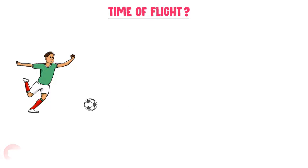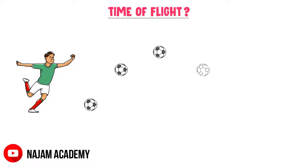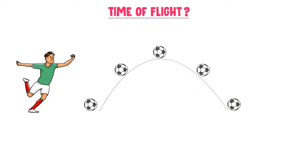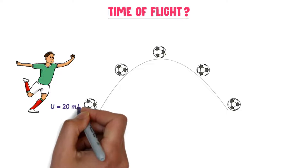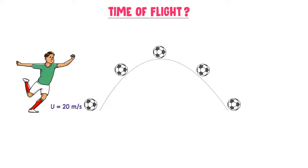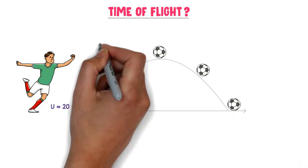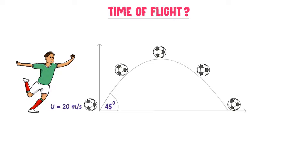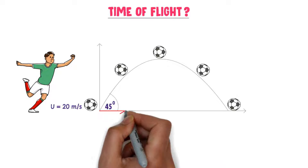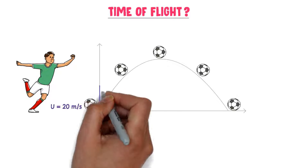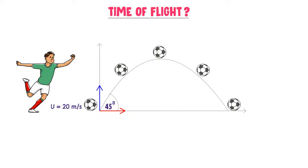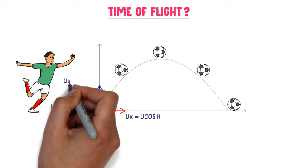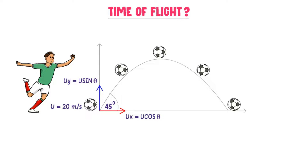Consider a ball. Let you kick this ball and it starts moving along a curved path. Let the initial velocity of the ball be u = 20 meters per second and the angle of projection is 45 degrees. We have learned in our previous lecture that this ball moves in both horizontal and vertical directions. The velocity in the horizontal direction is ux = u cos θ, and in the vertical direction is uy = u sin θ.